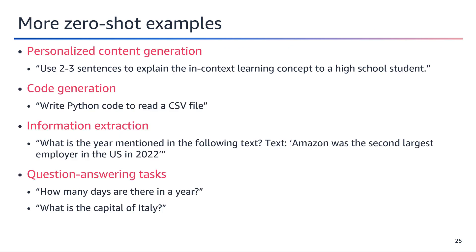This slide discusses several examples of tasks accomplishable using zero-shot prompting with large language models. Personalized content generation allows tailoring explanations to specific audiences, like explaining a concept to high school students using relatable language. Code generation showcases the ability to produce functional code snippets, such as writing Python code to read CSV files for data analysis. Information extraction tasks test comprehension by identifying relevant details from text, and question-answering tasks assess general knowledge. These examples highlight how LLMs leverage broad knowledge to perform various tasks by understanding the context and intent behind prompts without needing task-specific fine-tuning.